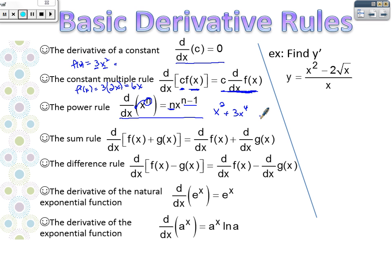But we cannot use this on, like, e to something, or a number to a variable. We can't use it on that. So that's a power rule. It's a very good rule.